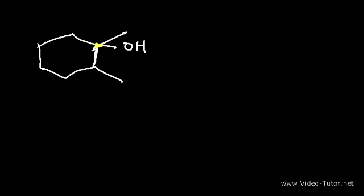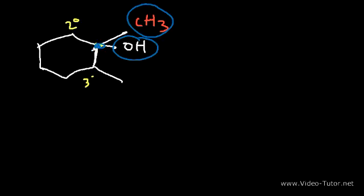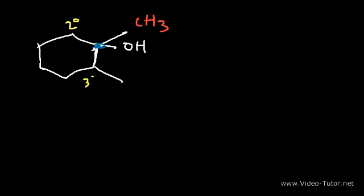After water attacks the tertiary carbocation, we get an oxonium intermediate, then a second water molecule removes the hydrogen to give an alcohol as the final product. Considering stereochemistry: the carbon bearing the OH group has a methyl group, and the left and right sides are different carbon atoms, so it has four different substituents — it is a chiral carbon. Therefore the product consists of two stereoisomers, with the OH either in the front or in the back.